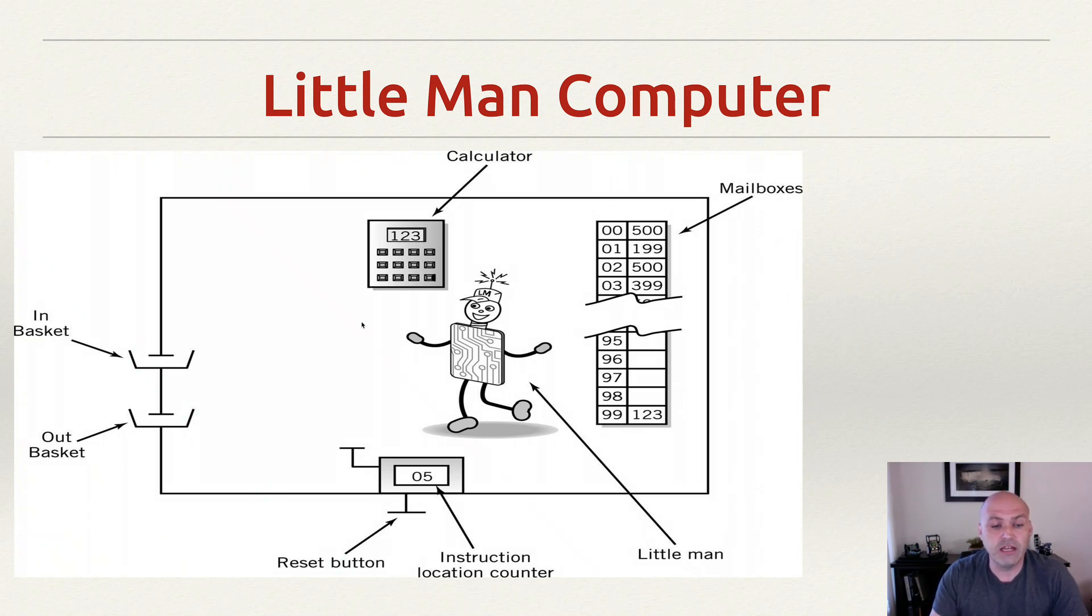We also have another register down here. This is called the program counter. The program counter allows us to know where we are in a program and to progress through it in order. We also have mailboxes. Mailboxes represent the memory in your actual computer, and we have these in and out baskets, which are kind of like the slot in the Chinese room thought experiment. This is where the computer takes in information and gives back output after it's done some kind of work.